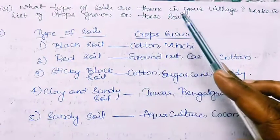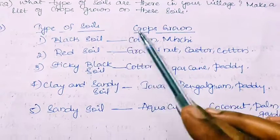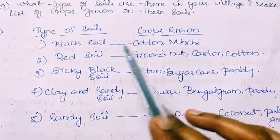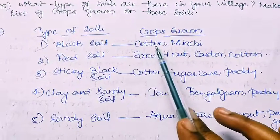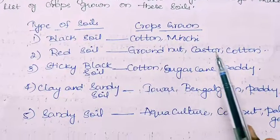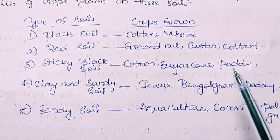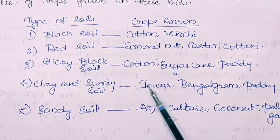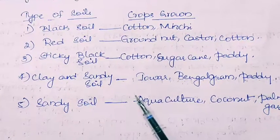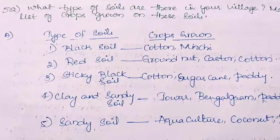Fifth question: What type of soils are there in your village? Make a list of crops grown on this soil. Different types of soil and the crops grown: Black soil is suitable for growing cotton and mirchi (chillies). Red soil is useful for growing groundnut, castor and cotton. Sticky black soil is useful for growing cotton, sugarcane and paddy. Clay and sandy soil is useful for growing jowar, Bengal gram and paddy. Sandy soil is useful for aquaculture and growing coconuts and palm gardens.